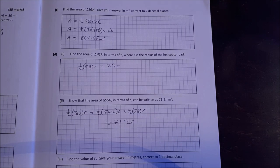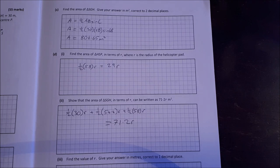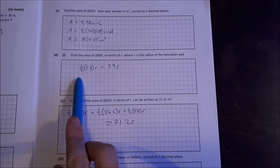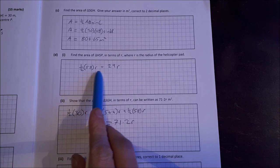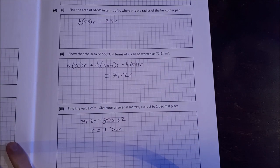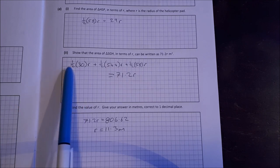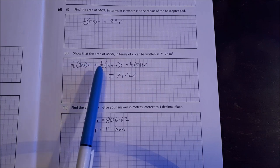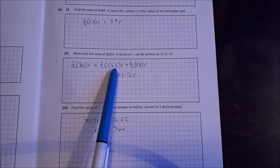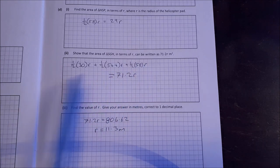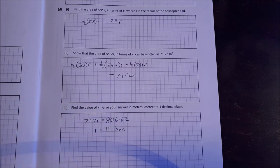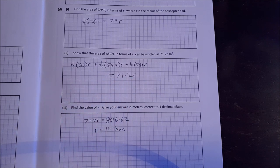Show that the area SGH in terms of OR can be written as 71.2 OR square meters. So half times 30 times OR, plus half times 54.4 times OR, plus half times 58 OR. All of them work out to give you 71.2 OR. So that's the area of triangle SGH, which we can split up into three smaller triangles.